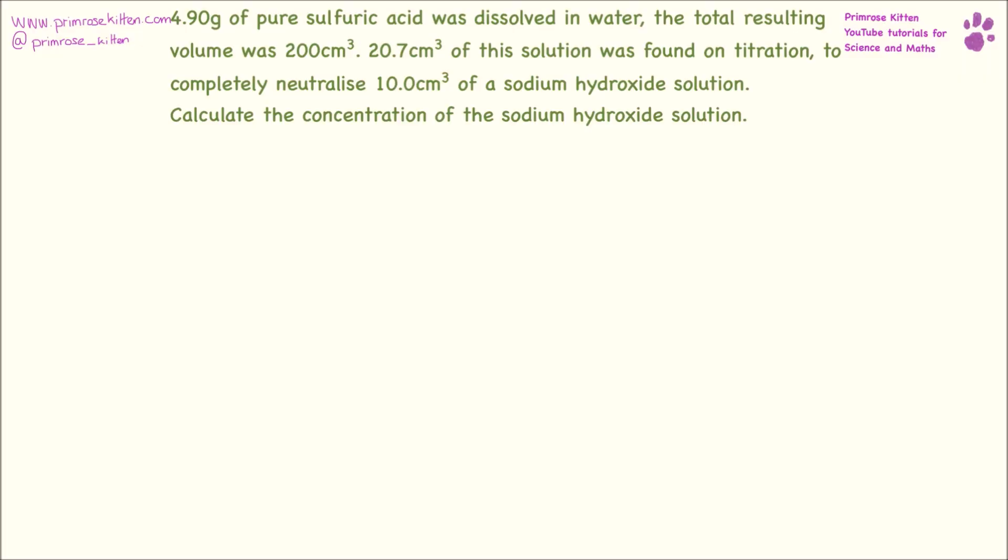This question is tricky because it involves multiple skills all at once. 4.90 grams of pure sulfuric acid was dissolved in water. The resulting volume was 200 centimeters cubed. 20.7 centimeters cubed of this solution was found on titration to completely neutralize 10 centimeters cubed of sodium hydroxide solution. Calculate the concentration of the sodium hydroxide solution.